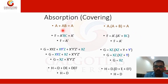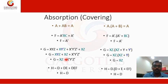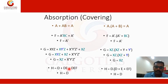Another very important law is the absorption law. If we have A plus AB, we can write simply A, because taking A common gives A(1 plus B), and 1 plus B is always 1. Similarly, A dot (A plus B) equals A. For example, AD plus DE plus DEF: taking D common from the last two terms gives D(1 plus F), which equals D, and then taking D common again with 1 plus E gives D.